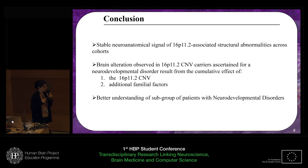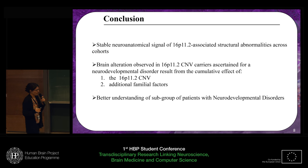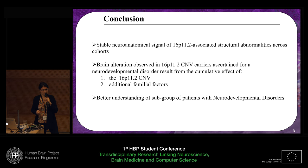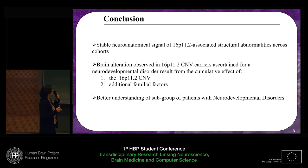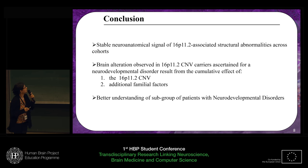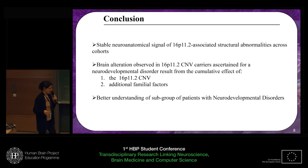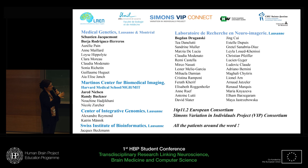To conclude, we showed in this study that we can detect a stable neuroanatomical signal related to the 16p11.2 structural abnormality across cohorts, across scanning sites, and across MRI parameters — suggesting a robust biological signal and not an artifact. Secondly, the brain alterations observed in carriers ascertained in clinics for neurodevelopmental disorders appear linked both to the mutation and to additional familial factors. We believe this stratified genetic approach could help better understand a subgroup of patients with neurodevelopmental disorders, since autism and related conditions show a lot of heterogeneity, and this could provide underlying biological homogeneity to better understand these disorders.